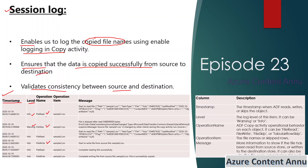All these operations are logged, and it also logs the file name that is getting copied under the column called operation item. Then we have the message column, which holds complete information related to that operation. For example, when a file is getting read, it captures the last modified date, item type, and size of the file — all the details are captured under the message column.